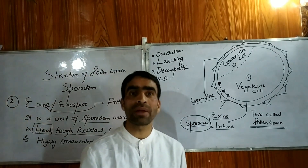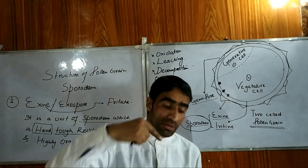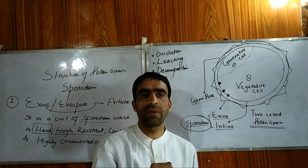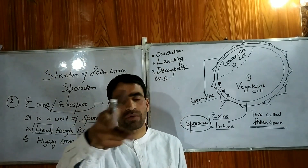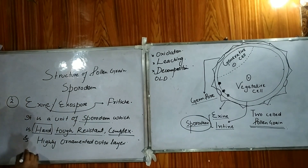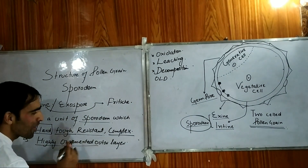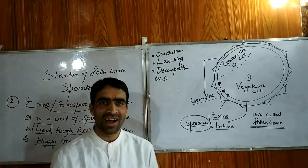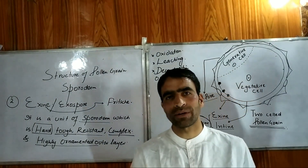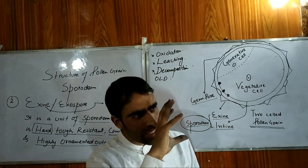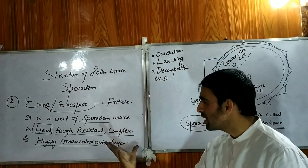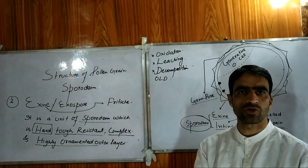Besides being hard and resistant, exine is very complex — it is not smooth. If we look closely, it has sub-layers which we will explain. It will be more complex than the intine. It is intricate and highly complex. Besides, it is highly ornamental. If you look at the pollen grain under a microscope, you can see beautiful patterns — spiky structures. So it is a highly ornamental outer sub-layer.